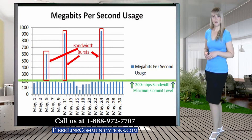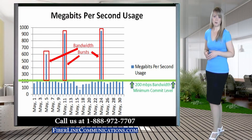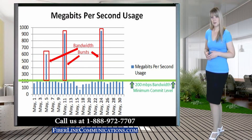The extra amount the customer pays above the minimum commit is a calculation of how much bandwidth is used above the minimum commit and for the time the burstable bandwidth was used. Most providers calculate usage at the 95th percentile.